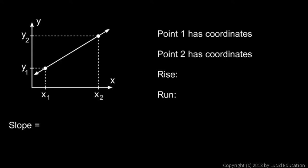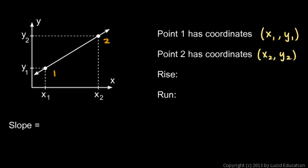Now, apply that concept in general. Look at this — these are two points. Let's call this point 1 and point 2, and these could be anywhere. Point 1 has coordinates x1, y1. Those could be any numbers, anywhere in the xy plane. And the same with point 2 up here — point 2 has coordinates x2 and y2. So the rise will be that interval on the y-axis, which would be y2 minus y1. And the run would be this interval on the x-axis, which would be x2 minus x1.